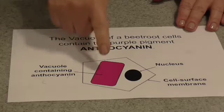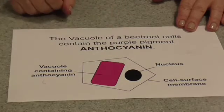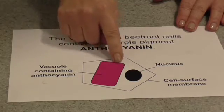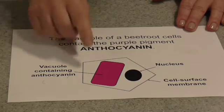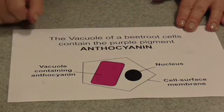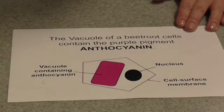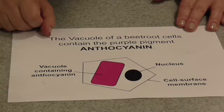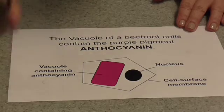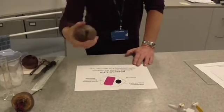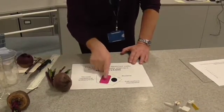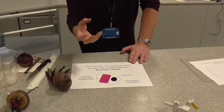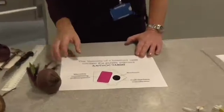The anthocyanin is actually contained within the vacuole of the beetroot cell. In order to escape from the cell, the anthocyanin must first pass through the membrane of the vacuole — in other words, the tonoplast — and then through the cell surface membrane. In a normal, healthy beetroot cell, this can't happen because anthocyanin is quite a large molecule and is unable to escape through the membrane. What we're going to do is put beetroot tissue in various temperatures and see how much red anthocyanin escapes, so we can work out the effect of temperature on cell surface membranes.